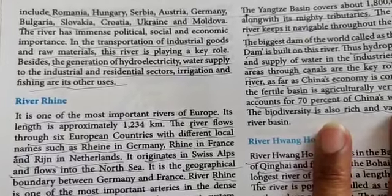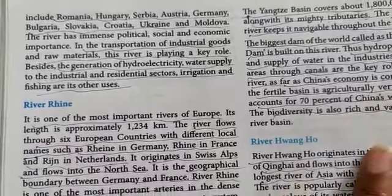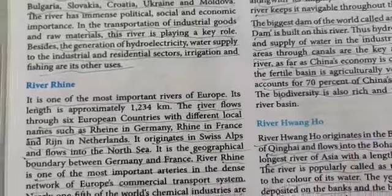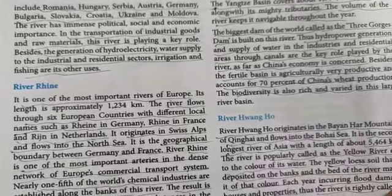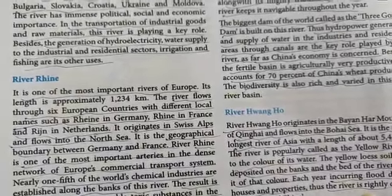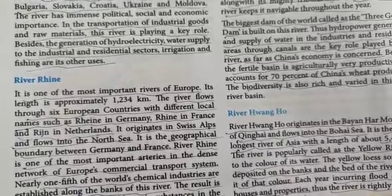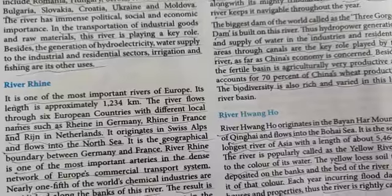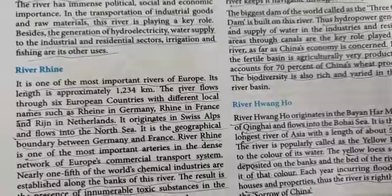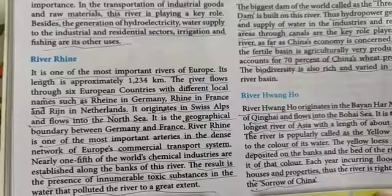The river has immense political, social and economic importance. Why political? Because it is passing through 10 countries, so it will have that impact on the political, social and economic life of the citizens of these countries. In the transportation of industrial goods and raw materials, this river is playing a key role — from one part of Europe to the other. Besides the generation of hydroelectricity, water supply to industrial and residential sectors, and fishing are its other uses.